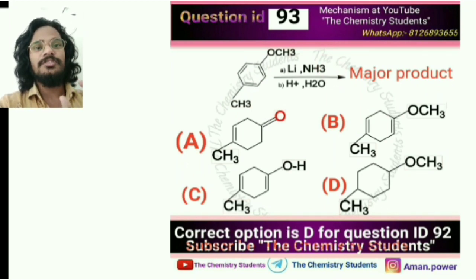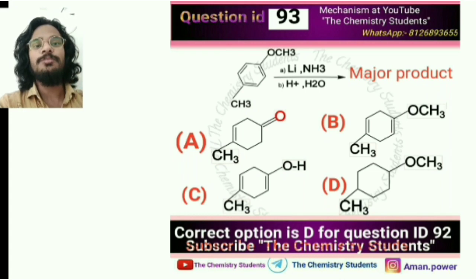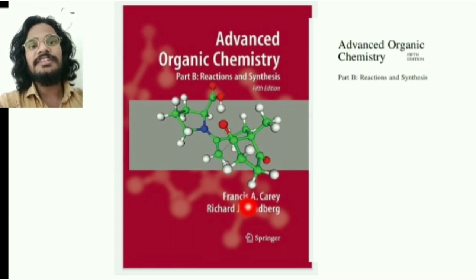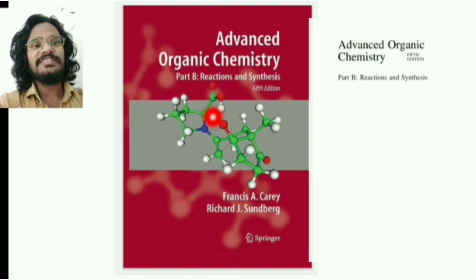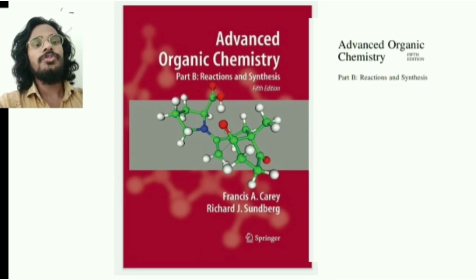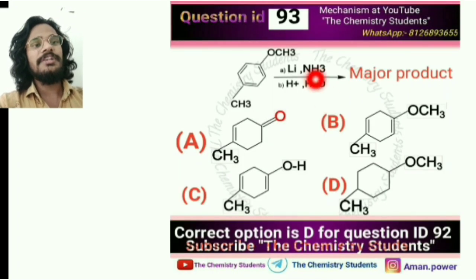You can see this type of problem everywhere, in any book. This particular example is taken from the book by Franz A. Carey and Richard J. Sandberg, Part B — a very famous book for organic reactions and organic synthesis. The book comes in two parts, Part A and Part B, and this is a question from Part B.